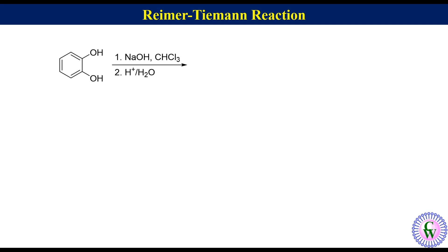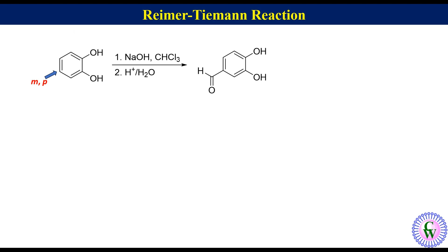Reimer-Tiemann reaction of catechol. In this molecule there are two positions, ortho-meta and meta-para, prone for attack by dichlorocarbene. But attack preferentially occurs at the meta-para position as it leads to the formation of a less crowded molecule. So the product will be 3,4-dihydroxybenzaldehyde.